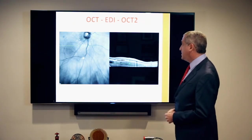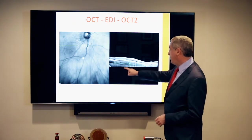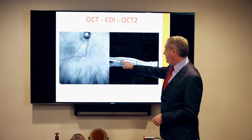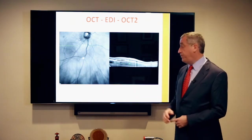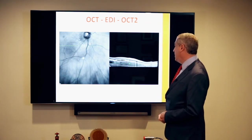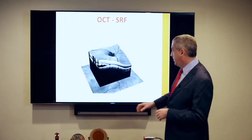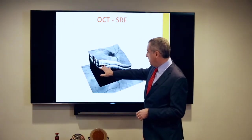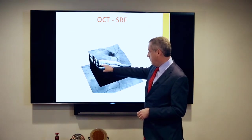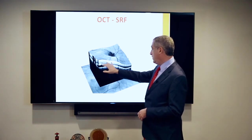On the OCT — especially this EDI OCT from Heidelberg — we have the tumor beneath the retina. We can see the subretinal fluid best with OCT, and you can even see the photoreceptors are degenerating above the tumor. On three-dimensional reconstruction of the OCT, also called a rasterized image, we can see the subretinal fluid beneath the retina, the dysmorphic photoreceptors, and the tumor beneath that.